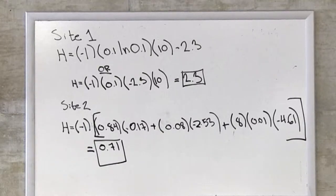h equals minus 1 bracket parentheses 0.84 times minus 0.17 plus 0.08 times minus 2.53 plus 8 times 0.01 times minus 4.61, giving us 0.71.